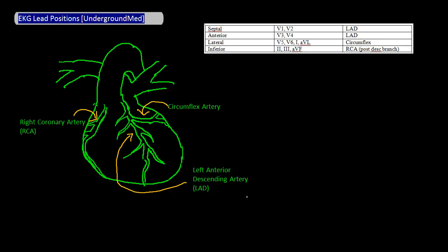The leads that are within the LAD's territory are V1 and V2, often called the septal leads, and V3 and V4, the anterior leads.